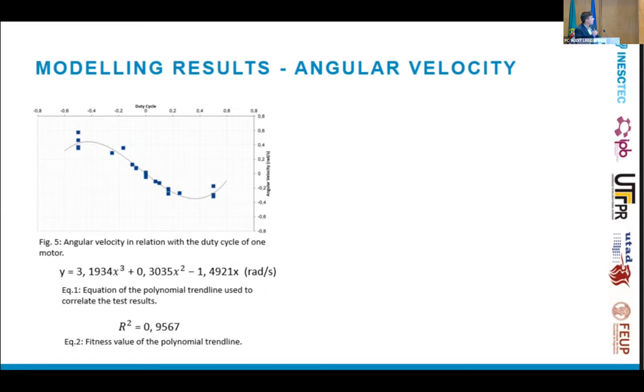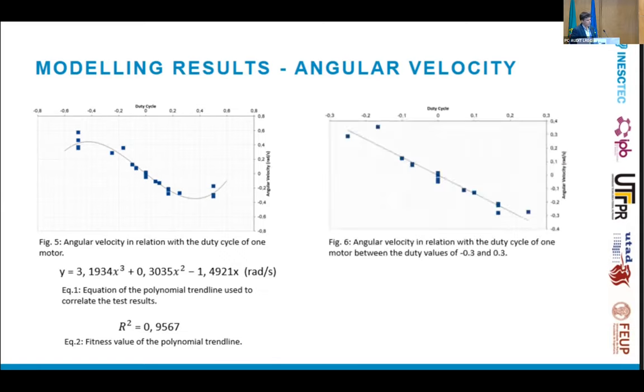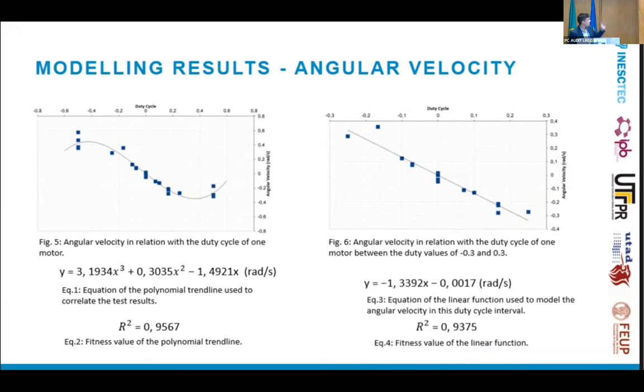These first tests were done to determine how we could control the angular velocity of the robot. As we can see, although in the extremities it's a fourth-degree polynomial, we have a very good fitness value. If we just reduce the interval to minus 0.3 and 0.3 PWM values, we can get a linear function to approximate the overall movement and angular velocity of the robot. This is the linear function we then determined.